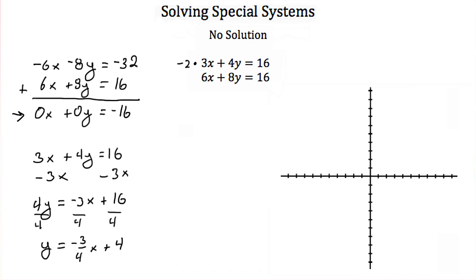We get y is equal to negative 3/4 x plus 4. To graph that, we have a y-intercept of 4, so we go to 4 on the y-axis. Our slope is negative 3/4, so we go down 3 and over 4 to get another point, then connect our points to get a line.